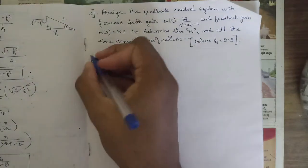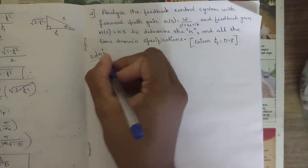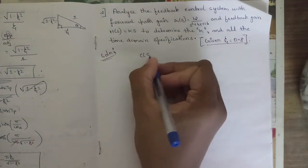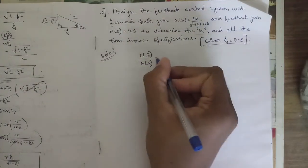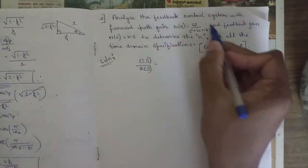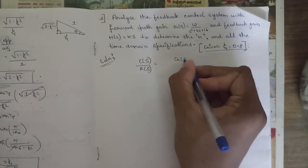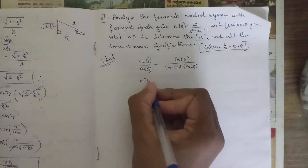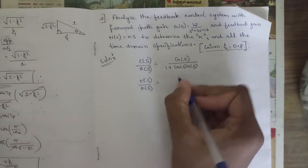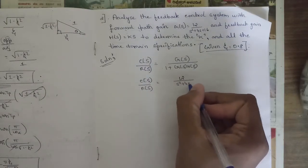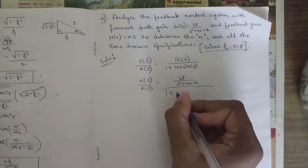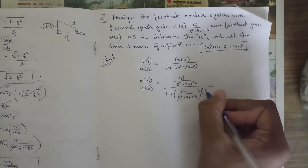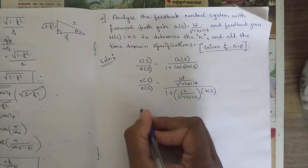The given data: ζ = 0.8. First write the transfer function c(s)/r(s) = G(s) / (1 + G(s)·H(s)). Substituting: numerator is 12/(s² + 4s + 16), denominator is 1 + [12/(s² + 4s + 16)] × k·s. Taking the LCM gives (s² + 4s + 16 + 12ks) in the denominator.